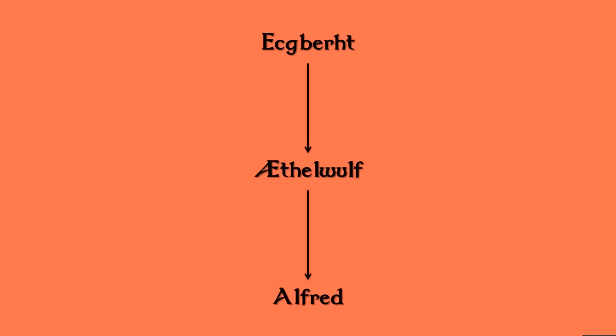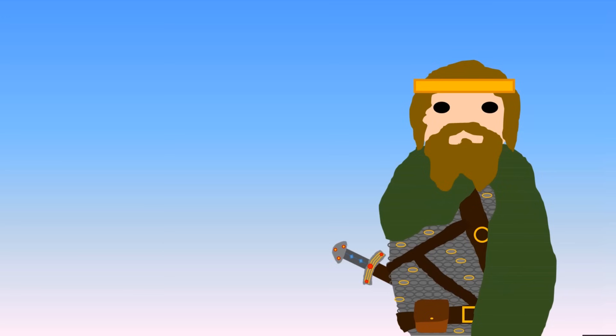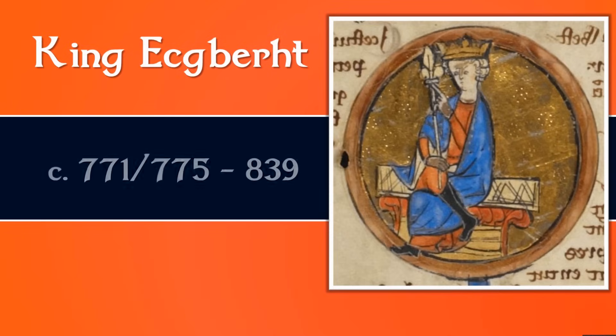His grandfather was a man called Egbert and his father was a man called Æthelwulf. Both of these kings were very important for the development of Wessex. So first I'm going to take a look at King Egbert, who was born around 771 to 775 — the sources are a bit unclear — and he ruled until 839.